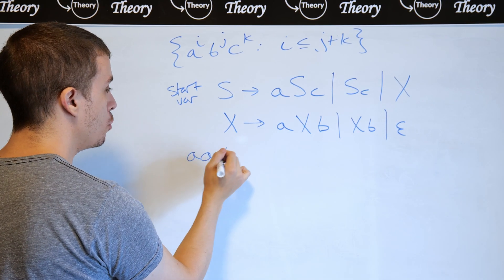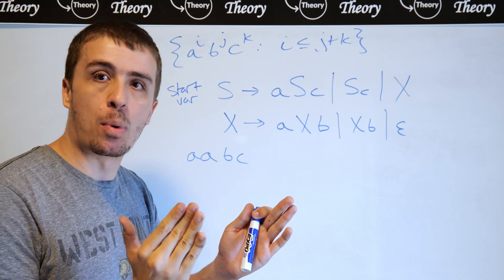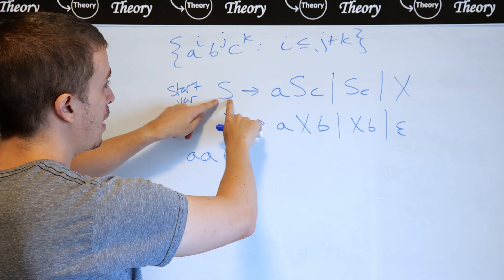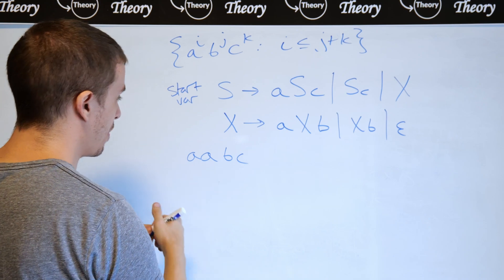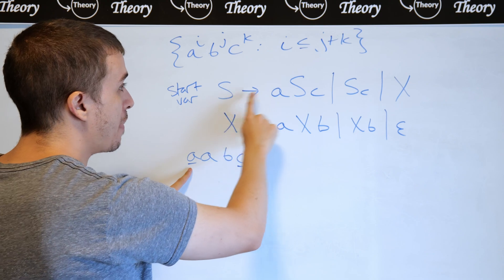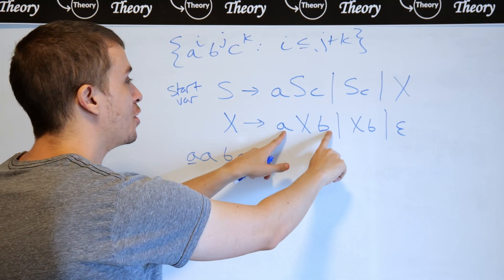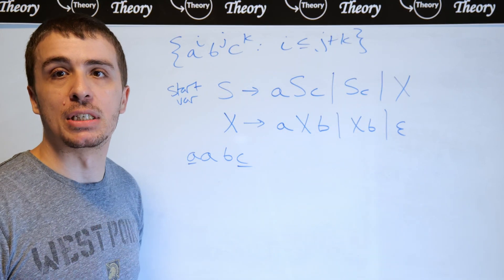So let's say I have two As, and then one B, one C. So it's right on the border of being in the language. Well, is this in the language? Well, if we do S, then A is C if we make this rule. So that means I'm going to generate that. So the Cs are done at this point, and then now we go into X. So can X make AB? And it certainly can by applying this rule, and then making X go to empty string.